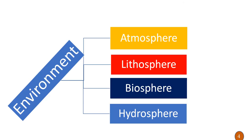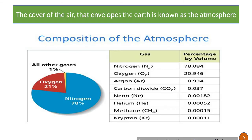The environment has four major components: the first is the atmosphere, then the lithosphere, then the biosphere, and the hydrosphere. Now we can see in detail the different components of the environment.